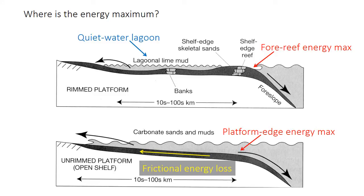As water flows across the platform — this wide and shallow area — it loses energy by friction, so the interior of the platform tends to be lower energy than the margin even when no barrier is present. There might be a secondary energy maximum where waves break at the shoreline, but by that point a lot of energy has been lost through friction as the water makes its way across this broad platform.